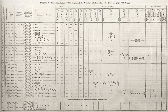Most algorithms are intended to be implemented as computer programs. However, algorithms are also implemented by other means, such as in a biological neural network — for example, the human brain implementing arithmetic or an insect looking for food — in an electrical circuit, or in a mechanical device.